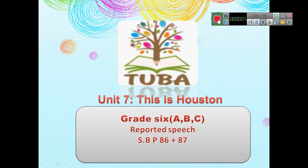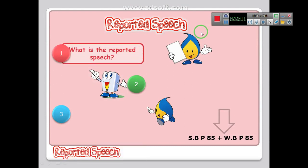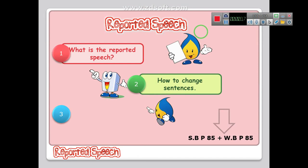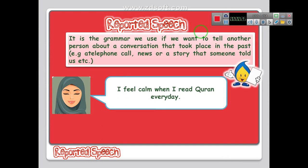In this video we are going to present the reported speech — what is the reported speech, how we change the sentence from direct speech to indirect speech, and we are going to practice using it. The reported speech is the grammar we use if we want to tell another person about a conversation that took place in the past, for example a telephone call, news, or a story that someone told us.